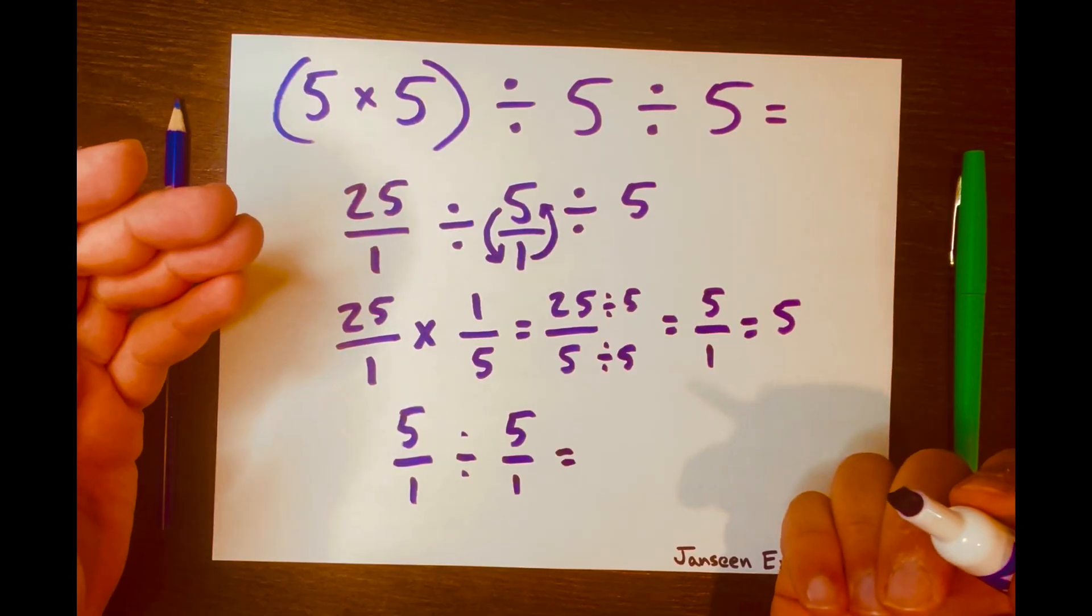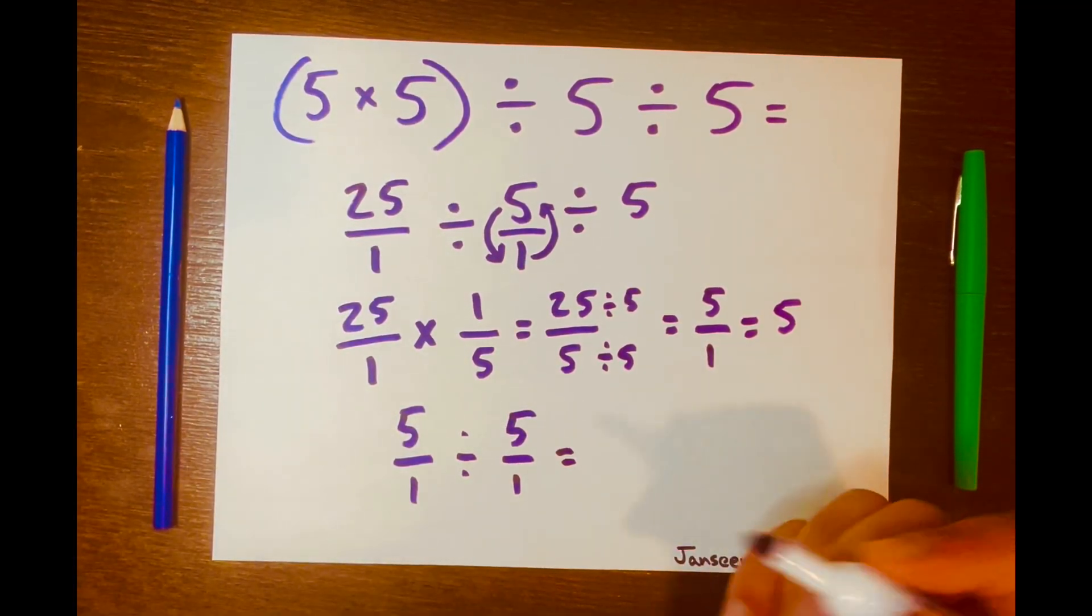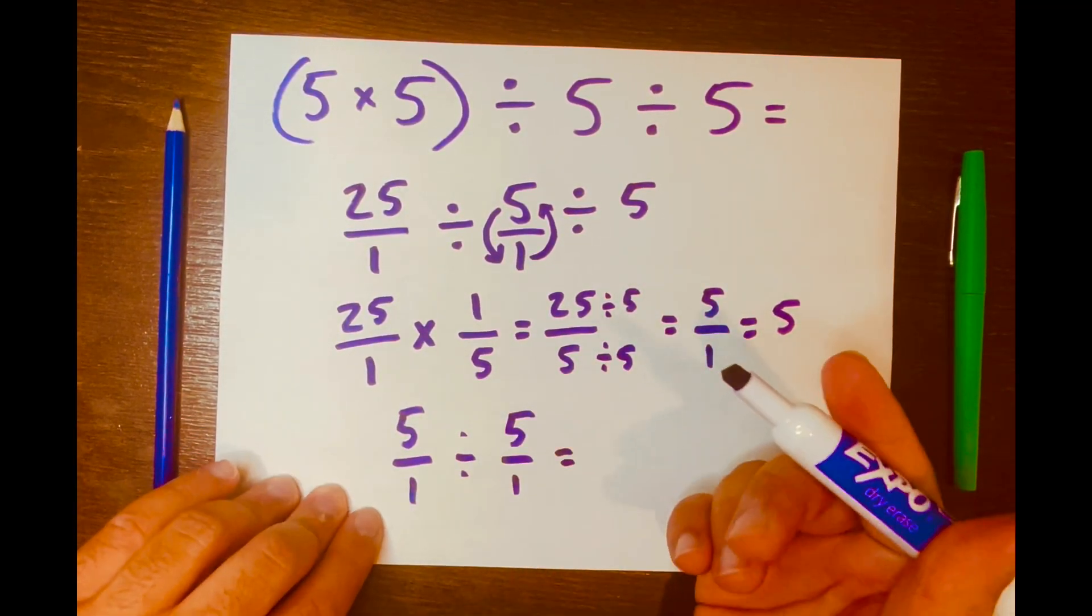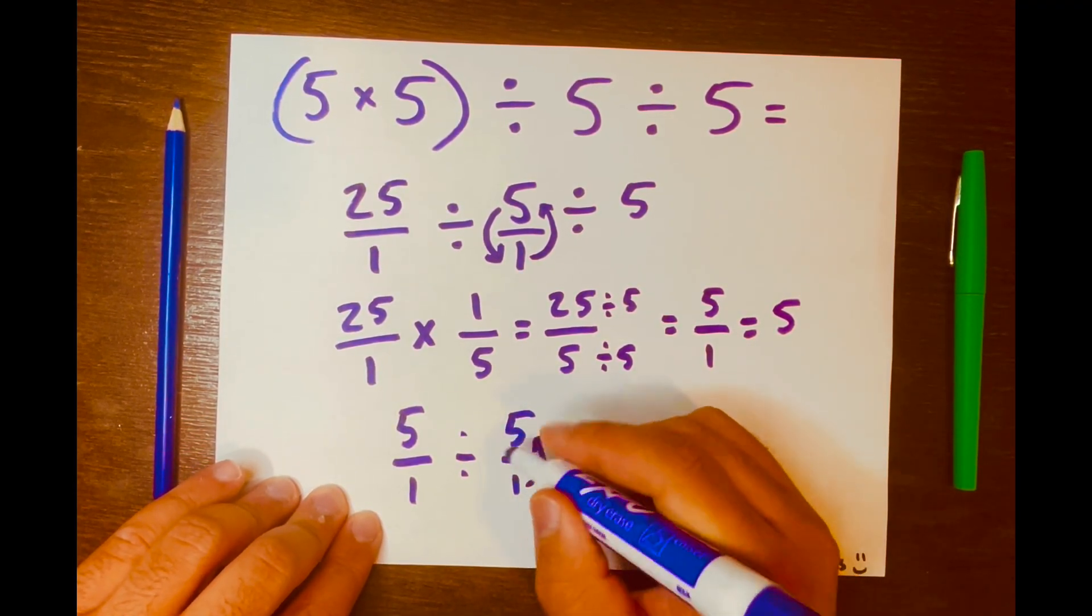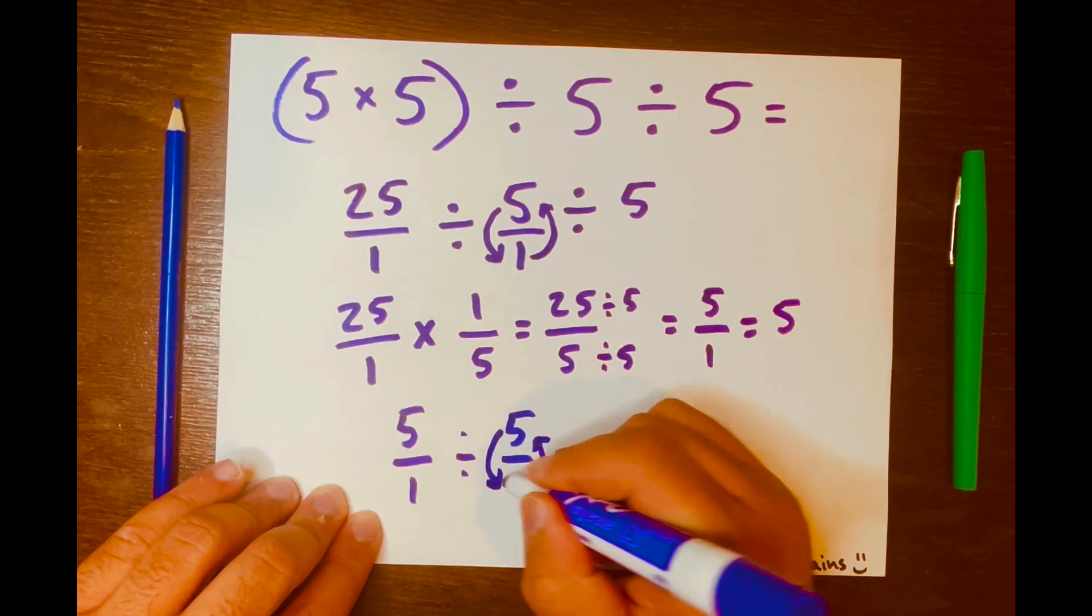And we can use the keep change flip method. All you're doing is you're flipping this fraction so the 1 will go on top of the fraction and the 5 will go at the bottom of the fraction, and this division turns into multiplication.